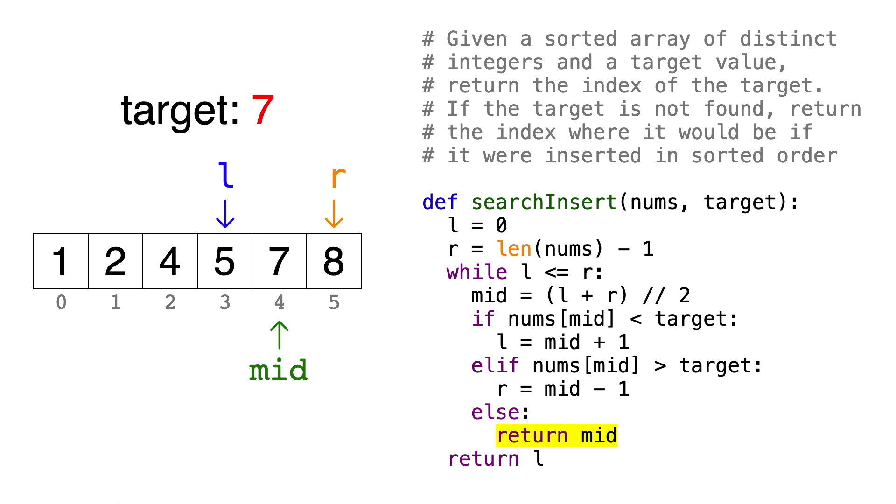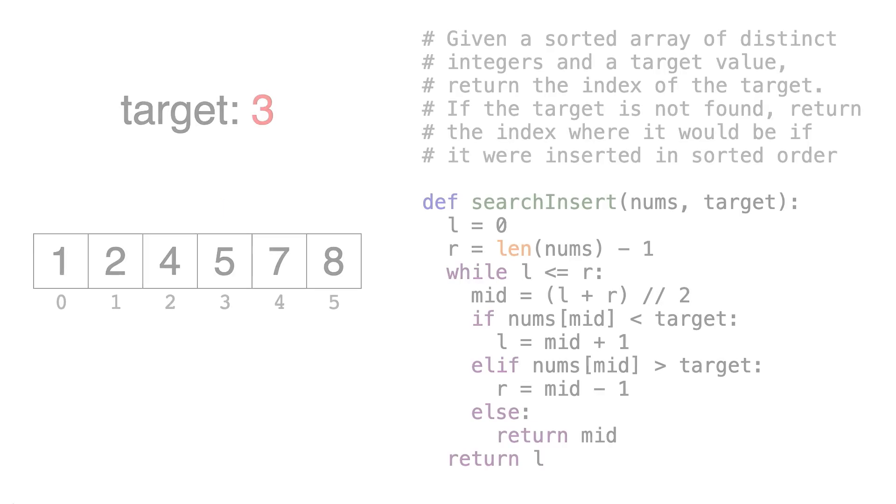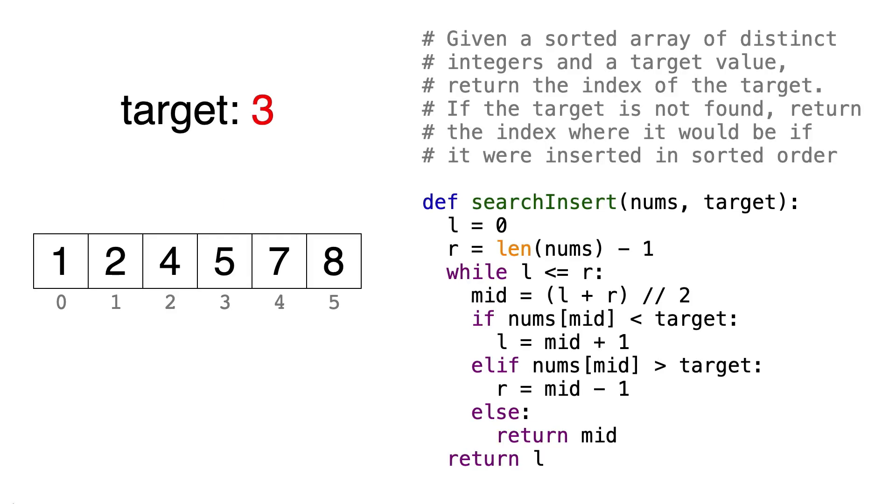But what happens if the element doesn't exist in the array? Let's try this again, but this time we'll make the target 3. We'll start the same way by establishing the left and right bounds and calculating the mid-index, which is 2. Then we compare 4 with the target, and we see that 4 is greater than 3. So we'll enter this elif block and update r to be mid minus 1, so it's 1.